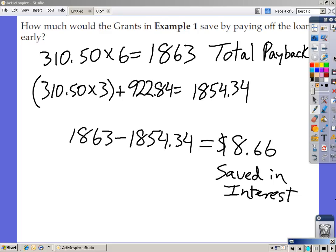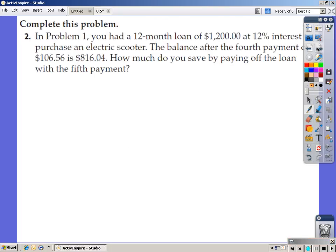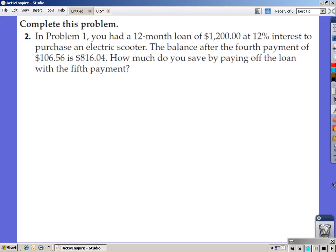Let's try the next example, number two. Complete this problem. In problem one, you had a 12-month loan of $1,200 at 12% interest to purchase an electric scooter. The balance after the fourth payment of $106.56 is $816.04. How much do you save by paying off the loan with the fifth payment? I'm going to push pause, give you all a couple minutes, and then resume play when you're ready.